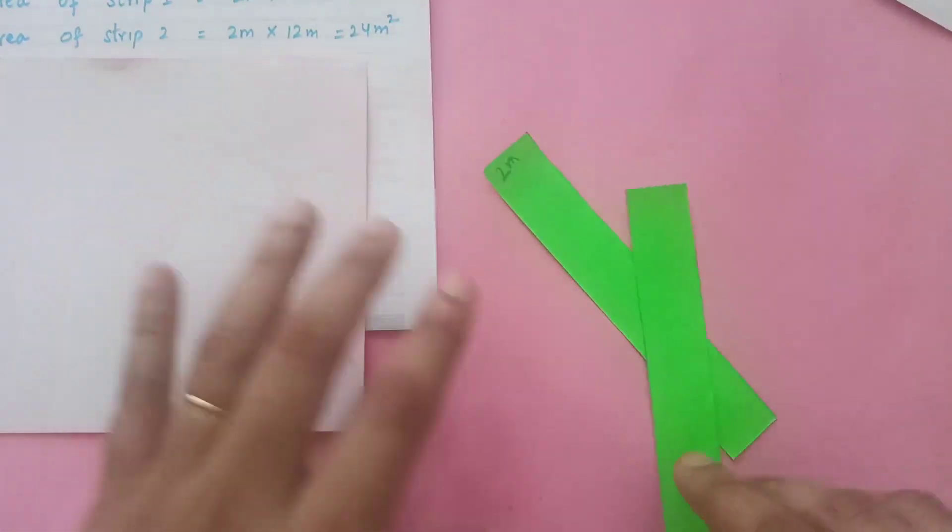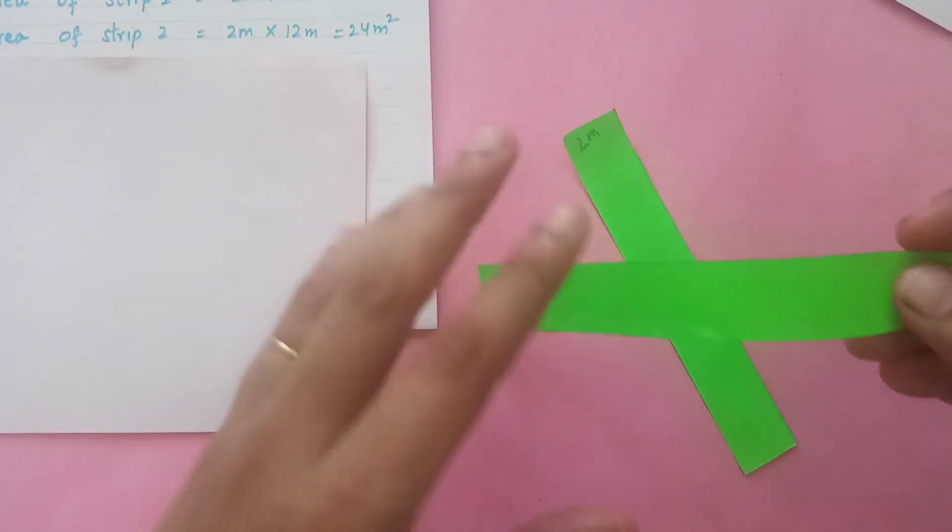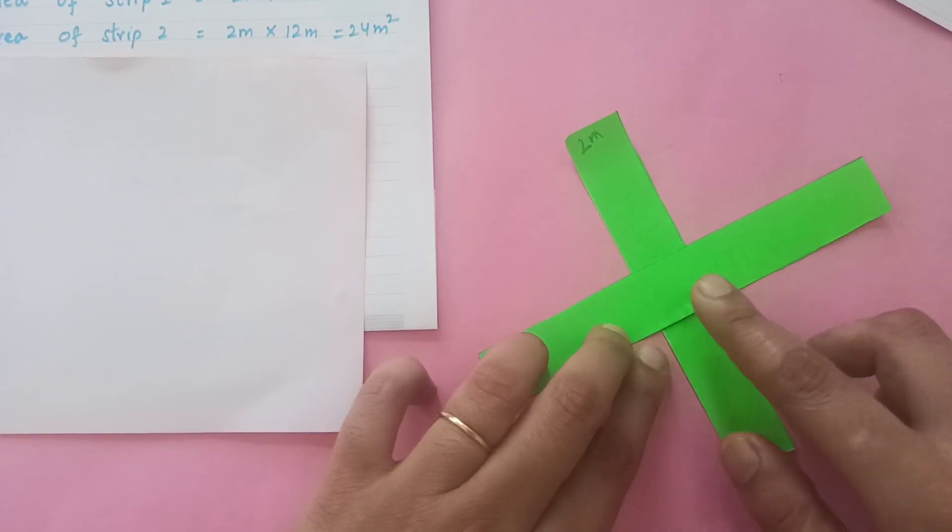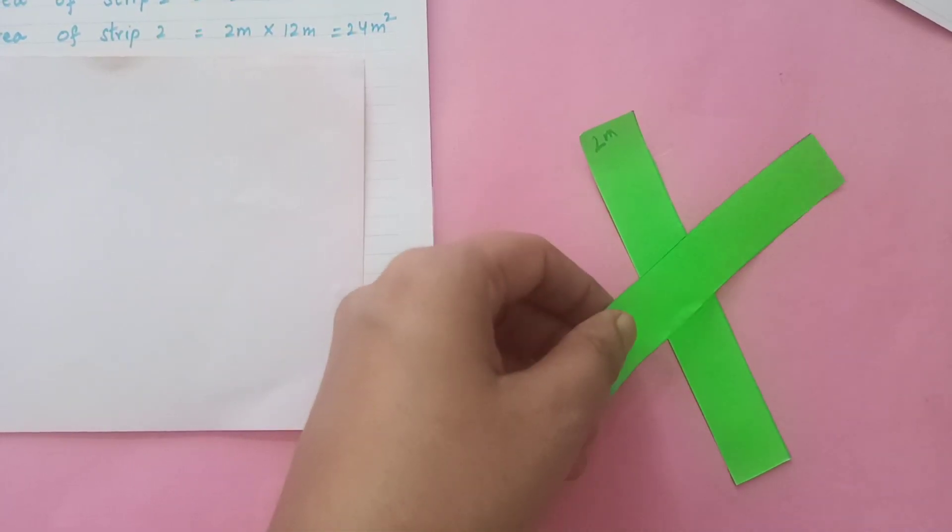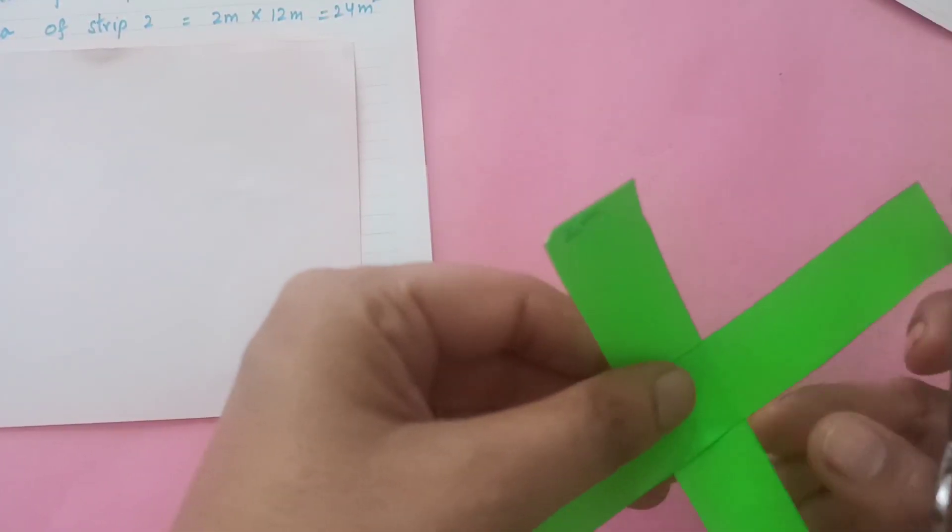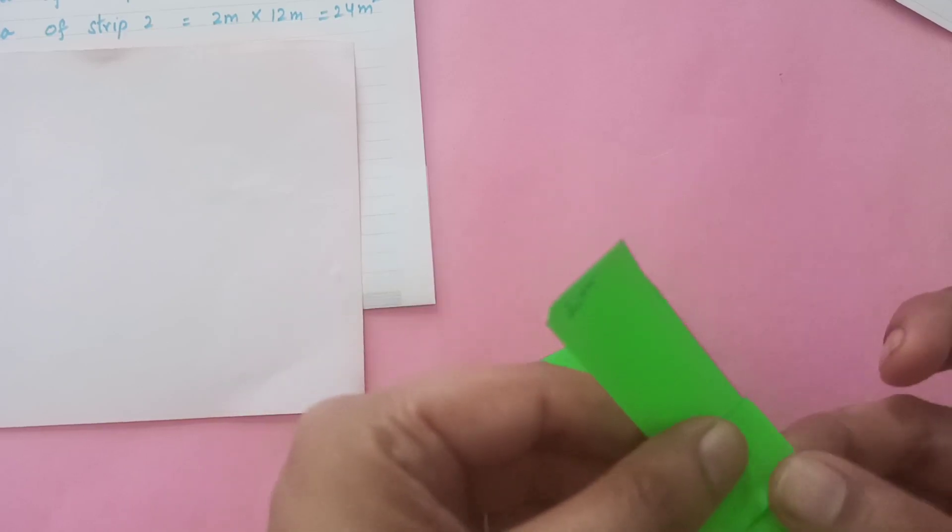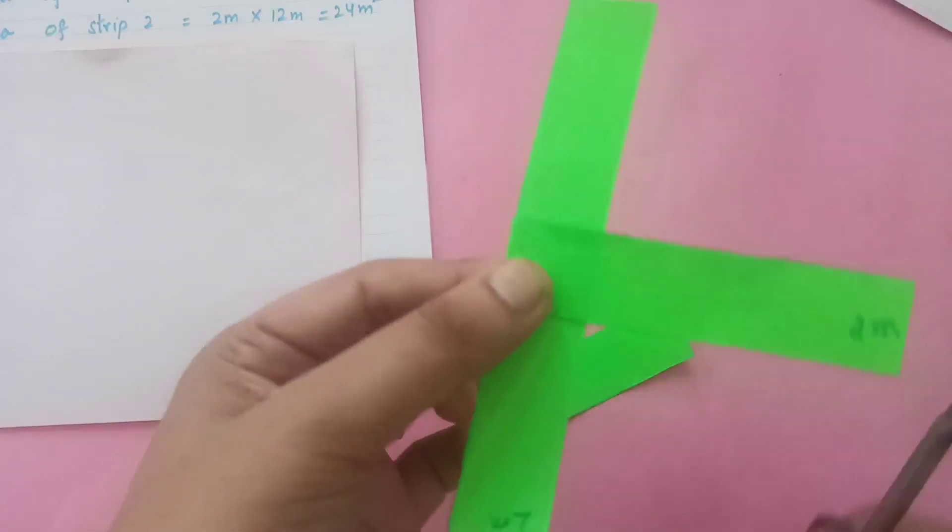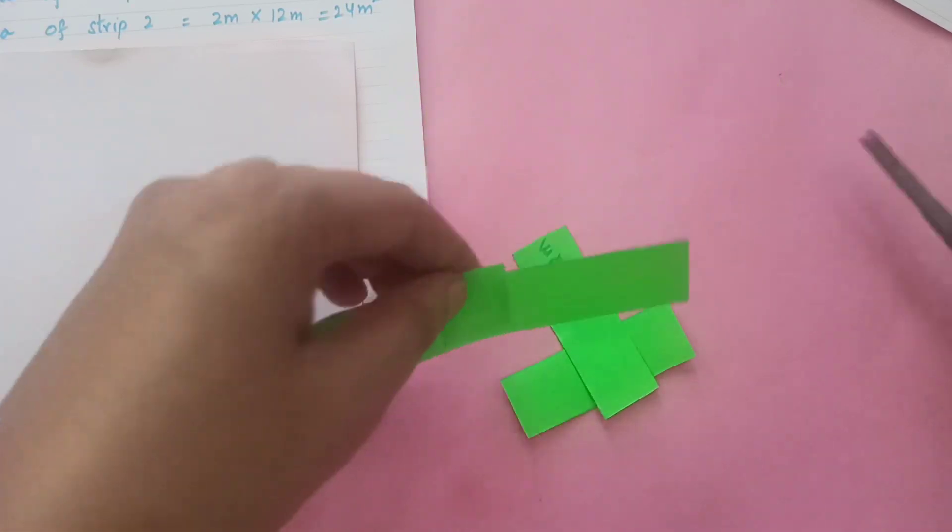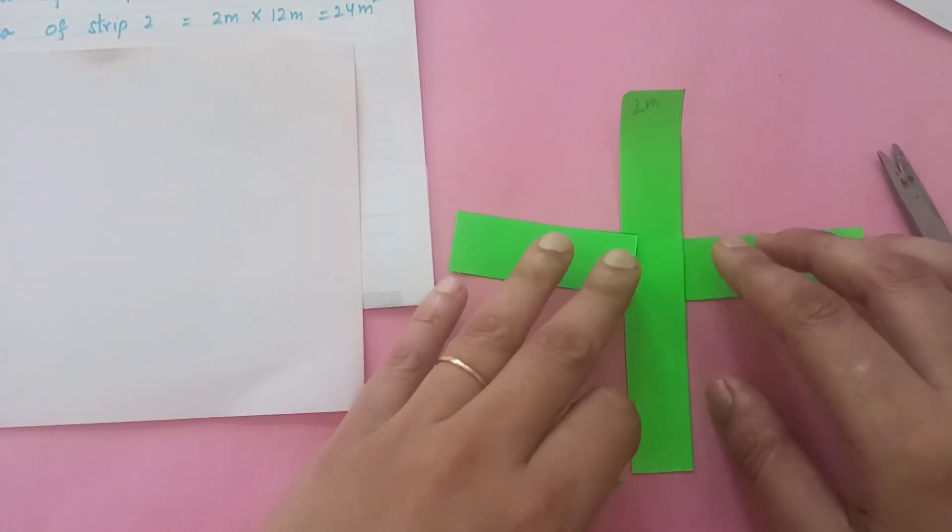Actually, whenever we construct the paths perpendicular to each other, what is the need of making an extra path over here? So in reality it is like this. Actually there is double area coming here which we have counted in both the strips.